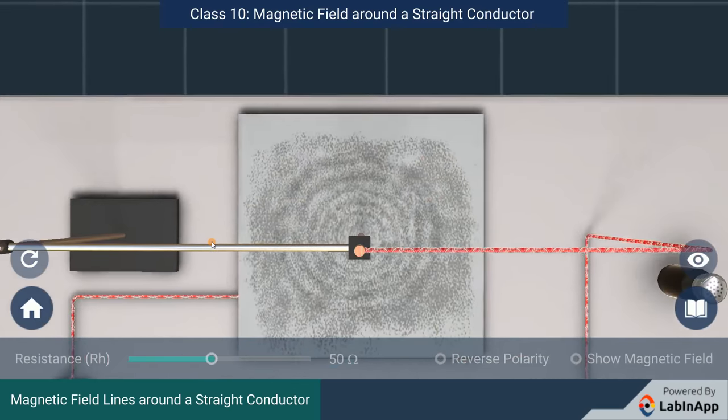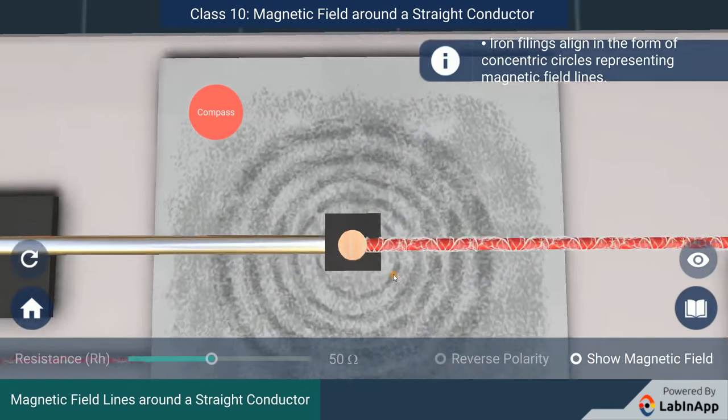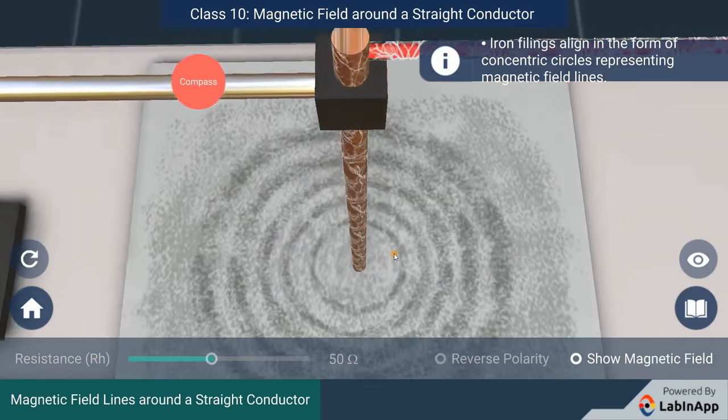We can observe that the iron filings are aligning in a pattern of concentric circles. These represent magnetic field lines.